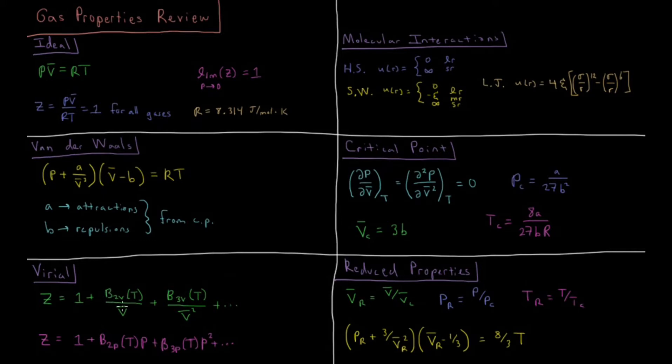The second virial coefficient divided by molar volume, plus the third virial coefficient divided by molar volume squared, and so on, a Taylor series of increasing polynomials in molar volume.